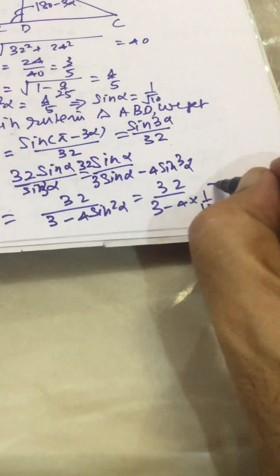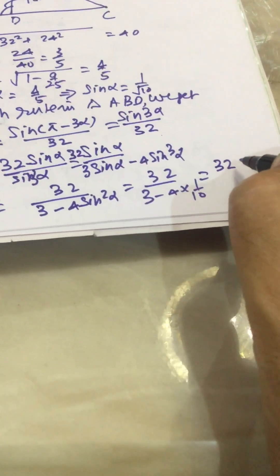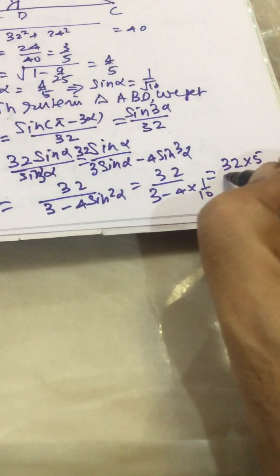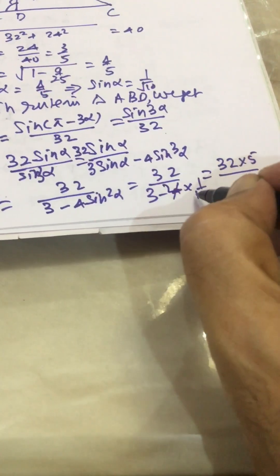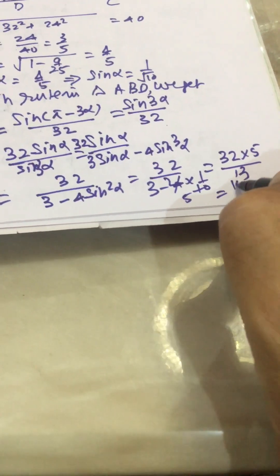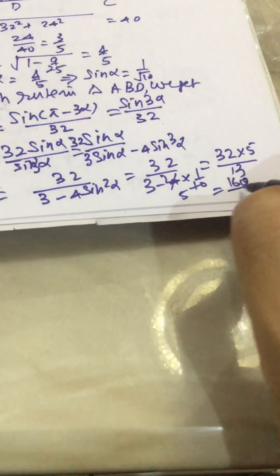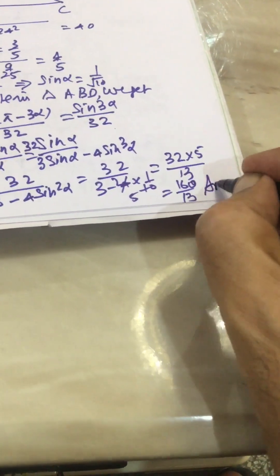So we get this as 32 times 5 divided by 13/5, this becomes 32 × 5 × 5/13, that is 160/13. So this is how, dear friends, we can find out the value of this x.